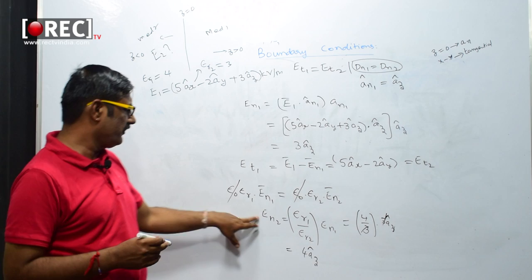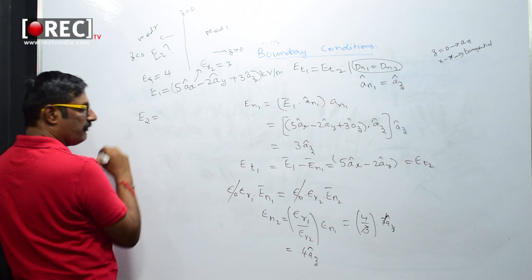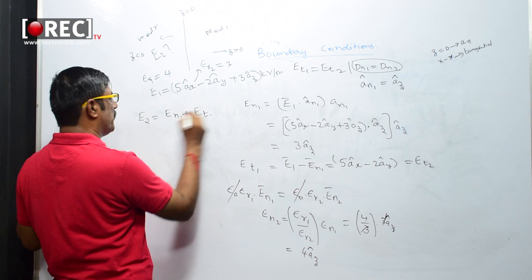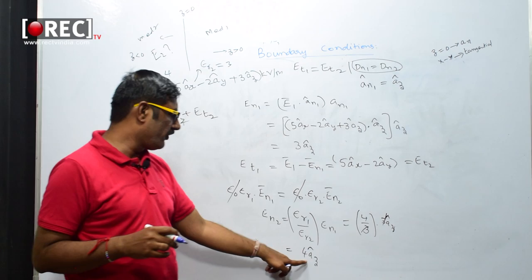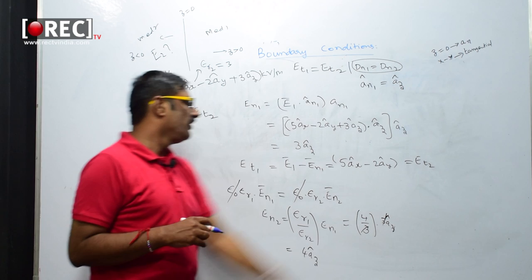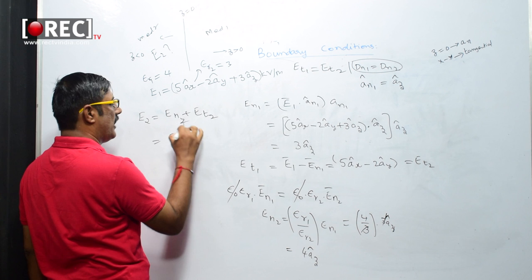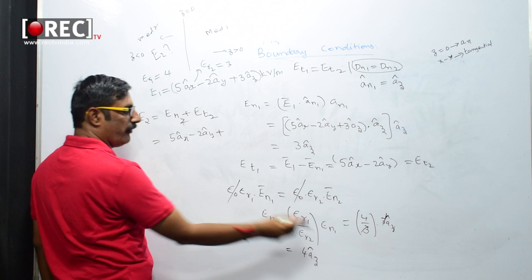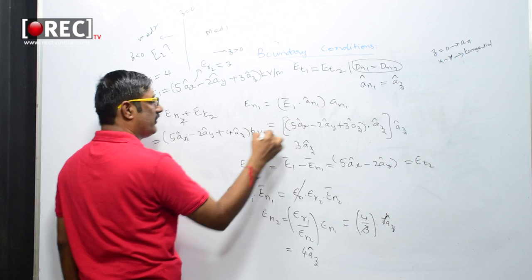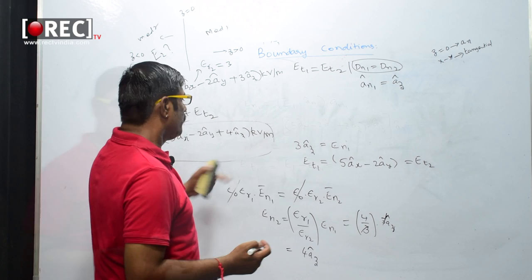E2 = En2 + Et2. En2 = 4az and Et2 = 5ax − 2ay, so the total E2 = 5ax − 2ay + 4az kilovolts per meter. This is the final value of E2.